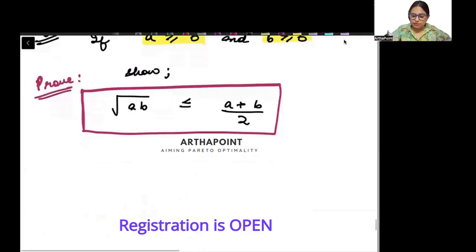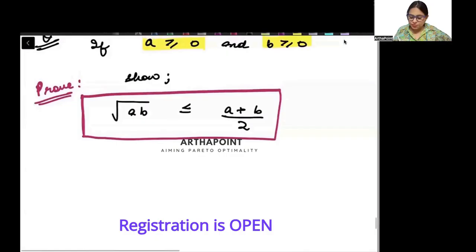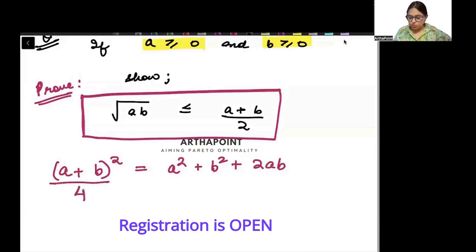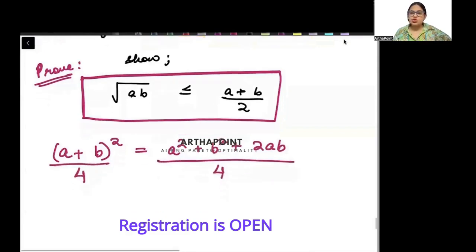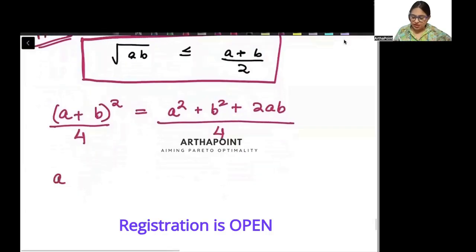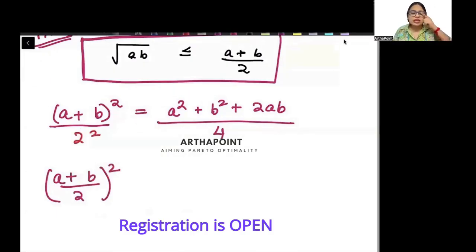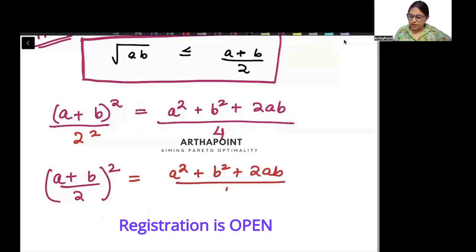Let's see how we could do it. We know that (a + b) whole square is equal to a squared plus b squared plus 2ab. What we will do is divide by 4 on both sides. So when we divide by 4 on both sides, I will get (a + b)/2 whole square, since 4 is nothing but 2 squared.